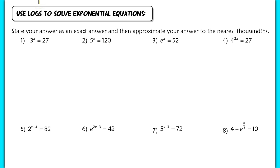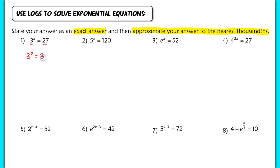The last section covers using logs to solve exponential equations. We need to state an exact answer and then approximate to the nearest thousandths. In example 1, we don't need logs at all — 27 can be rewritten as 3 cubed, so 3 to the x equals 3 to the 3rd, meaning x simply equals 3.